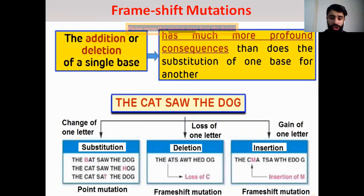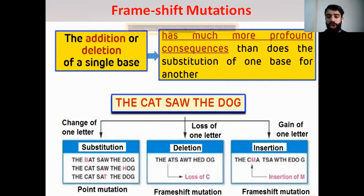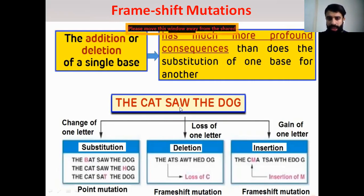Or by insertion — insertion means the addition of one letter, one nucleotide, or gaining one nucleotide. So we add, between C and A, the letter M. It becomes 'the cma tsaw the dog' — so it has no meaning. So these are the effects of frameshift mutations. They have a higher effect than those of substitution or point mutation.